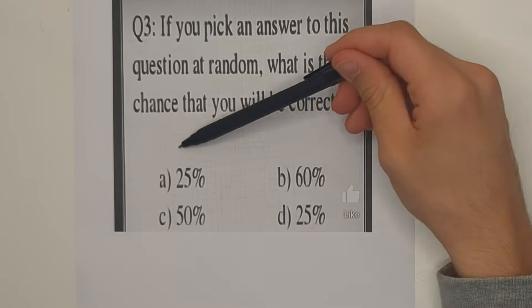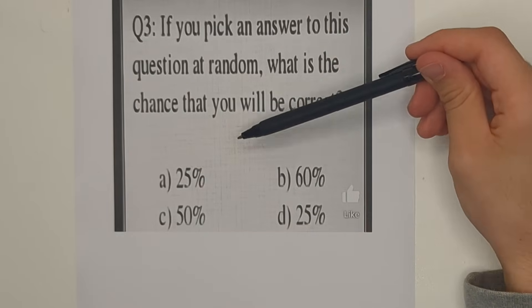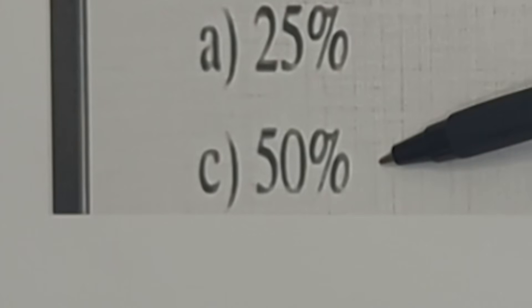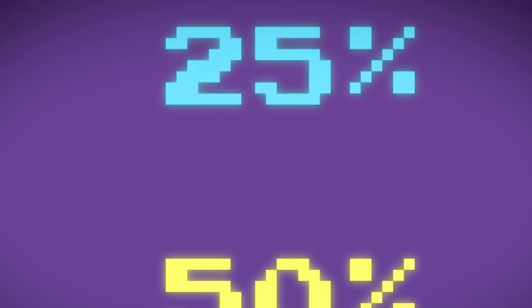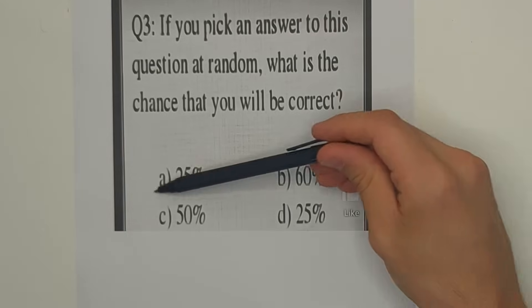then the probability of picking that is 50%, but if the answer is 50% then the probability of picking that is only 25%, so we just end up in this never-ending loop going between is the answer 25%, is it 50%?